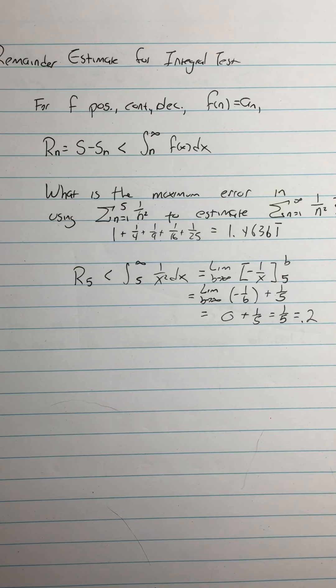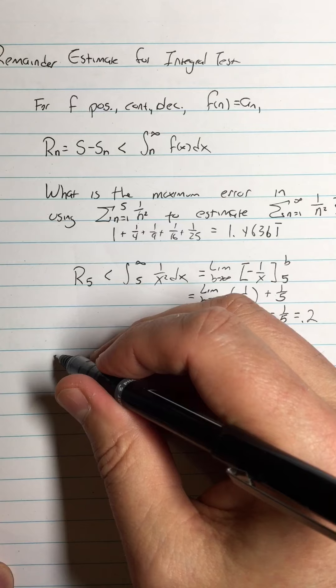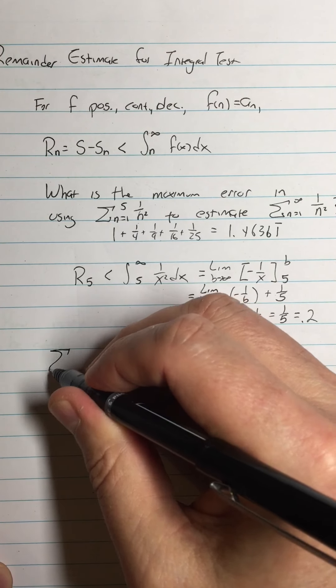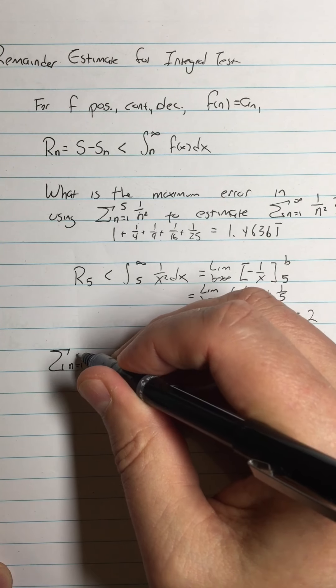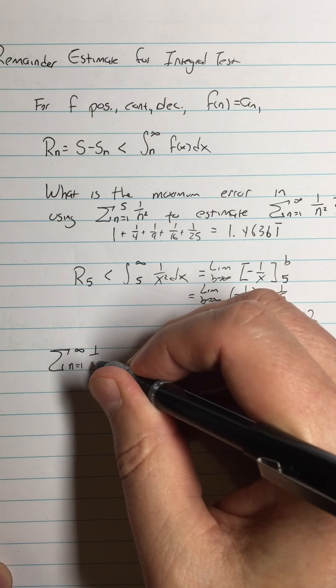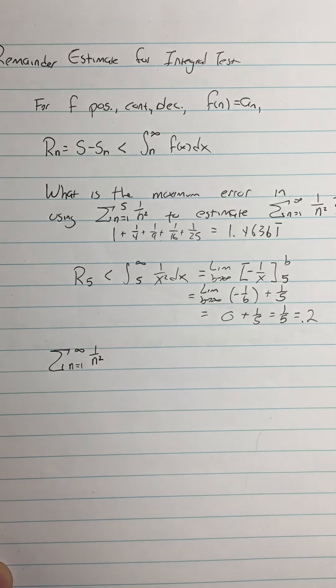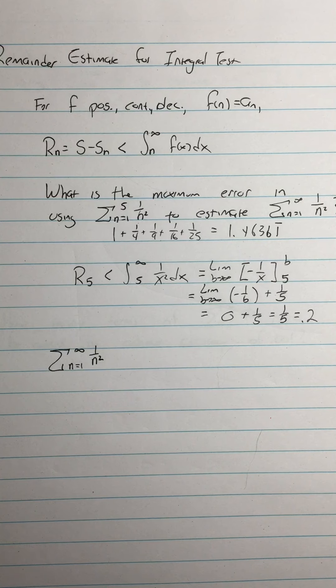Now, here's a fun fact. We actually know - and by we, I mean humanity as a whole - actually knows what the sum from n equals 1 to infinity of 1 over n squared is exactly to infinitely many decimal places.